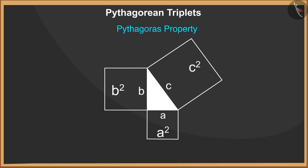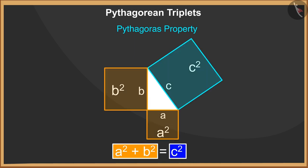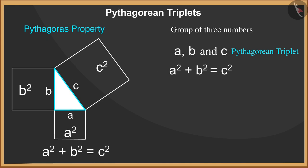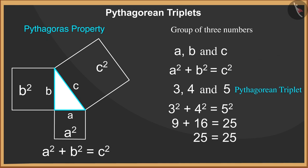Let us now understand about the Pythagorean triplet method. In the previous class we learned about the Pythagoras property, which states that in a right-angled triangle the square on the hypotenuse is equal to the sum of the squares on its legs. The group of three numbers that can represent the sides of a right-angled triangle are called Pythagorean triplet numbers. In a Pythagorean triplet, the sum of the squares of two numbers equals the square of the third number — for example, the numbers 3, 4, and 5.